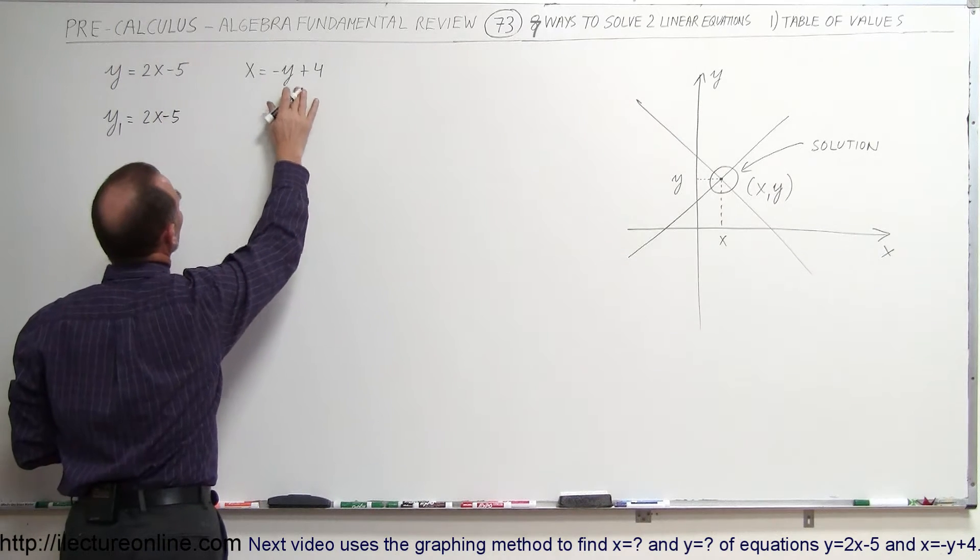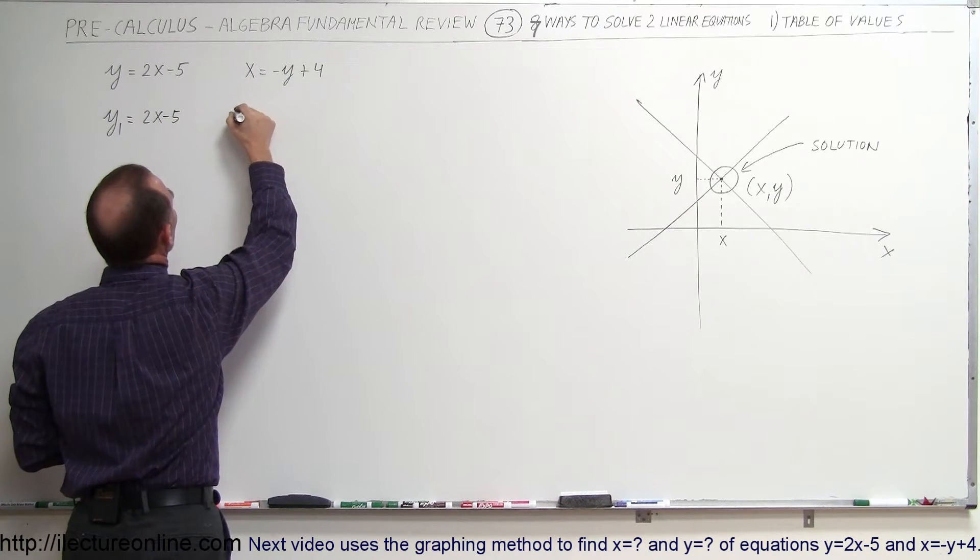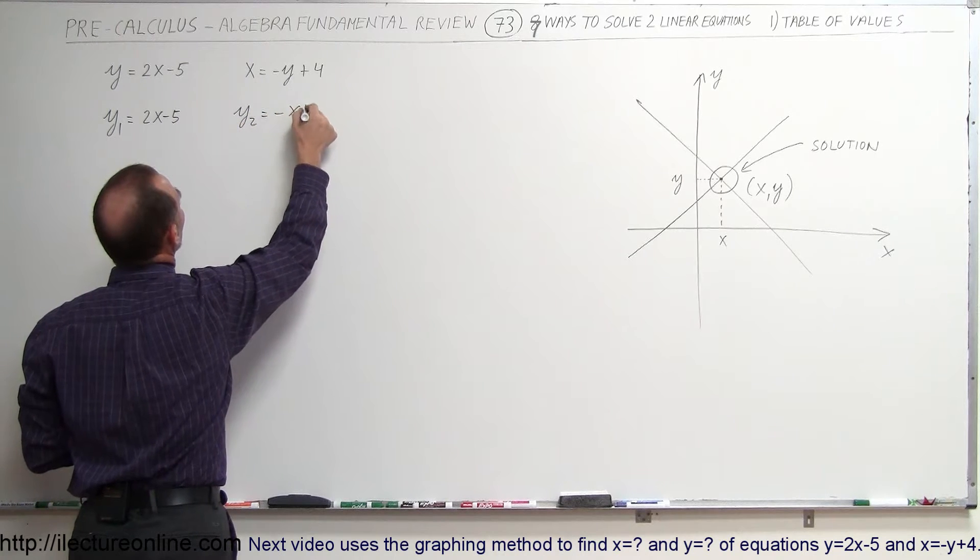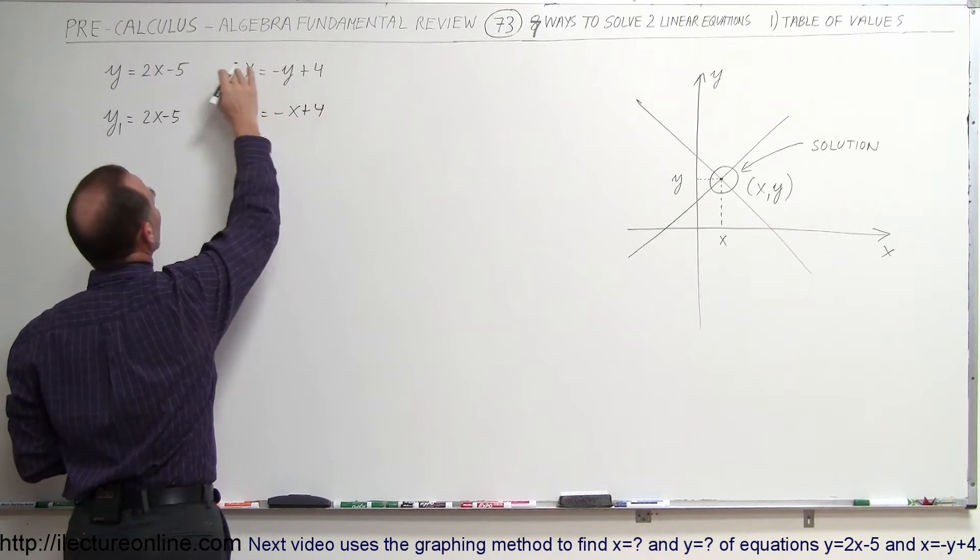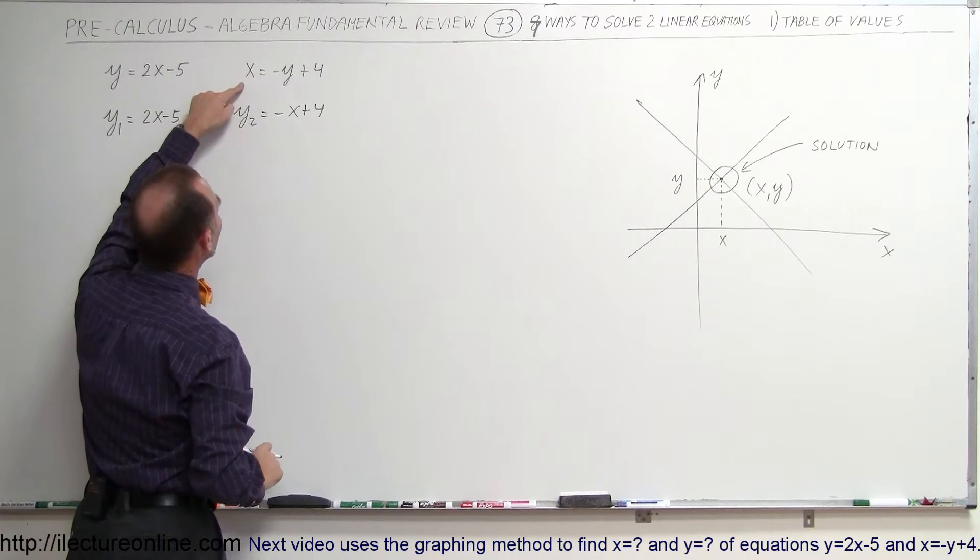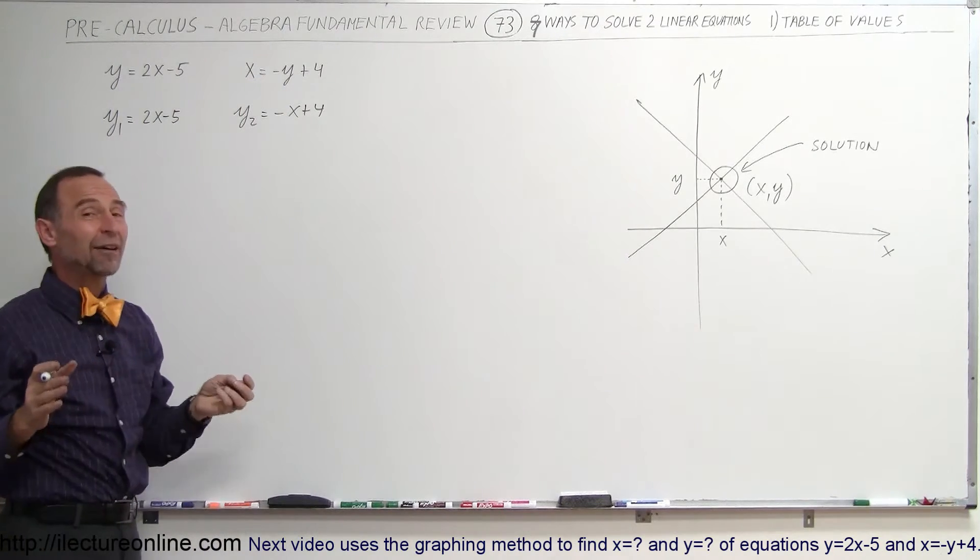and we're going to rewrite this equation, put the y on this side, put the x on that side, so y2 is equal to minus x plus 4. Notice that the minus y becomes positive on the left side, and the x becomes negative on the right side. So now I have two equations.